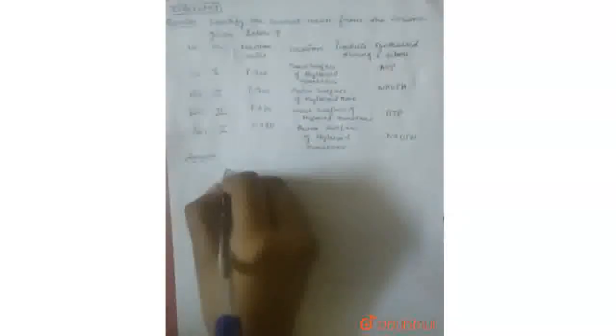As we know, photosystem first has the reaction center P700 and the photosystem second has the reaction center P680.